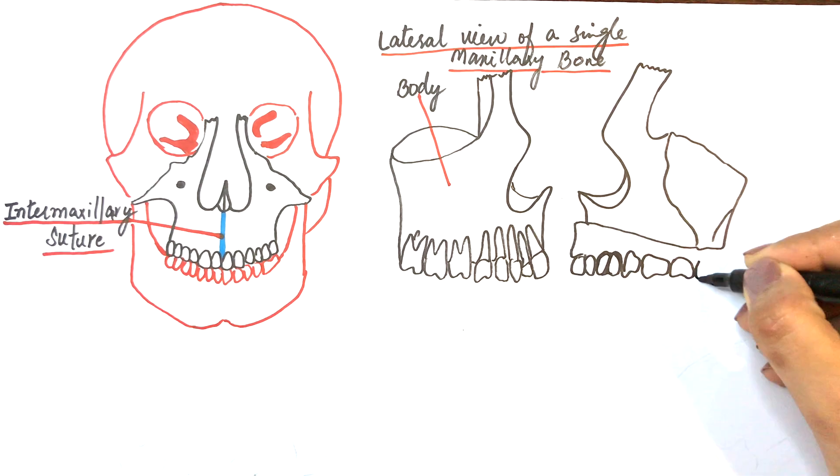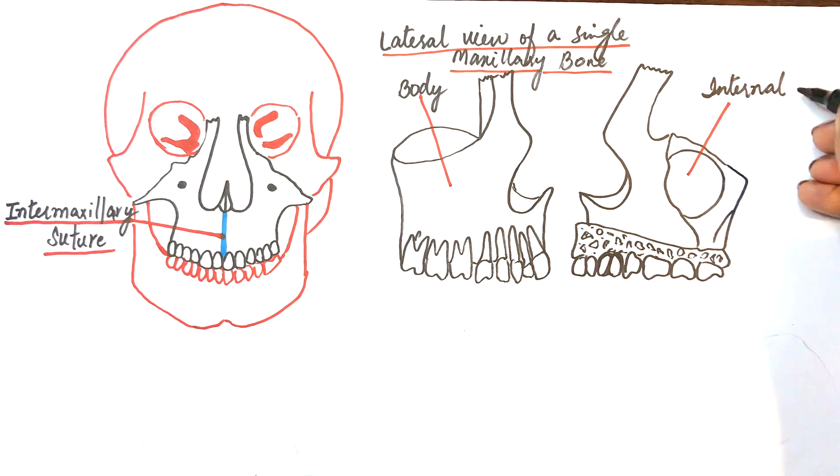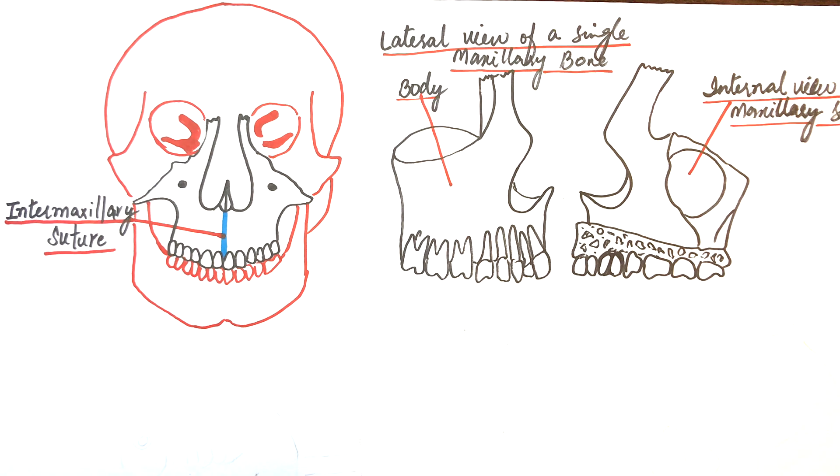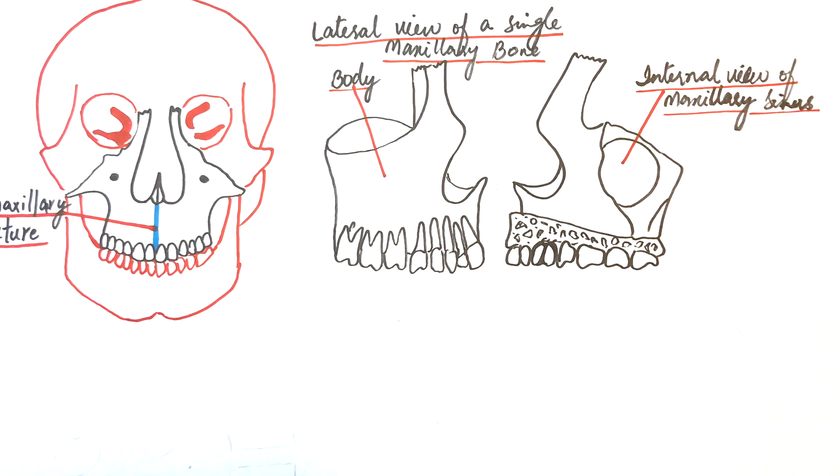The body occupies the maxillary sinus, viewed here from an internal view of a single maxillary bone. The maxillary sinus is pea-sized at birth and gradually increases in size with increasing age.